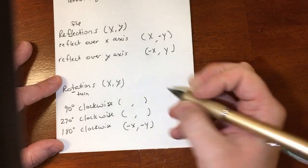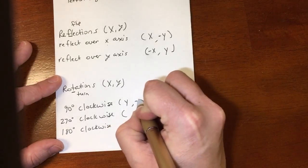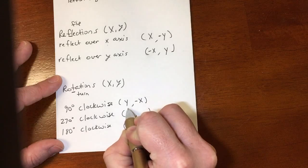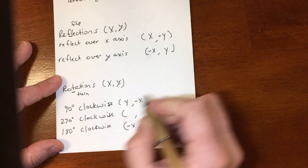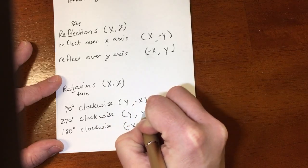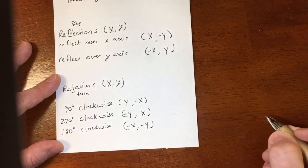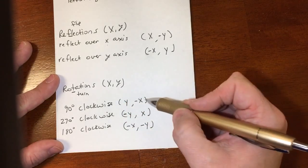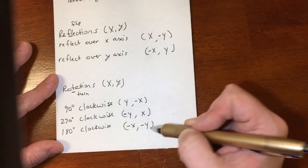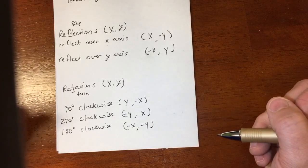The 90 and the 270, kind of confusing. The X and the Y switch places, and the X turns opposite for the 90. And the X and the Y switch places, and the Y turns opposite for the 270. So they're a little bit confusing to memorize, but there's some ways you can work around them.